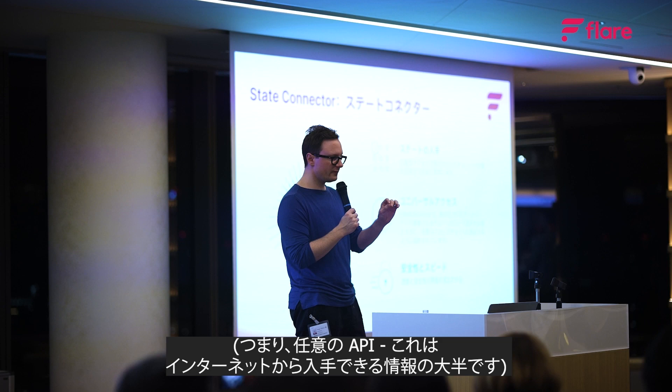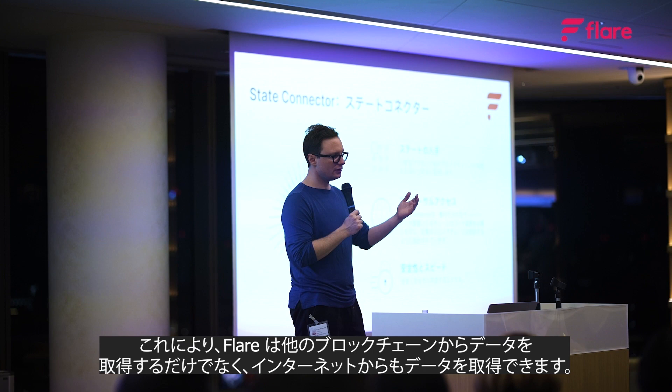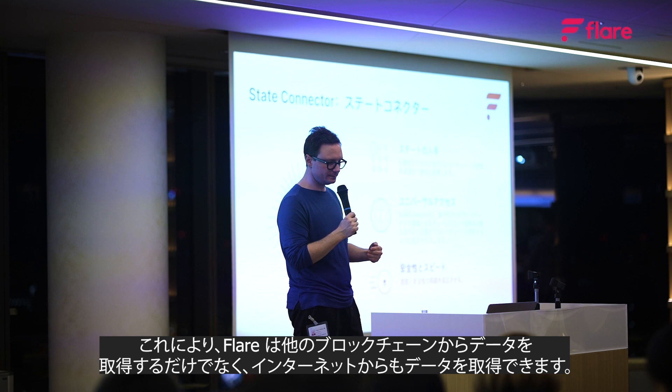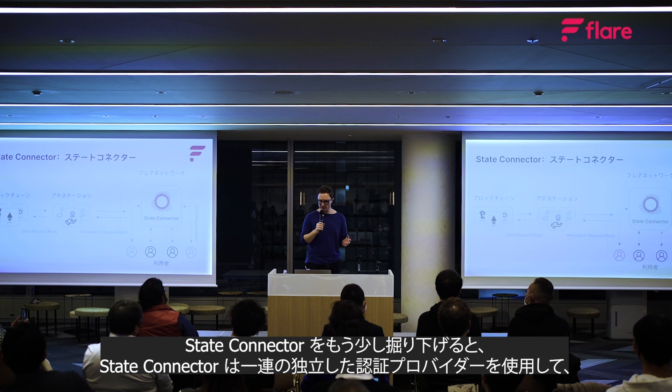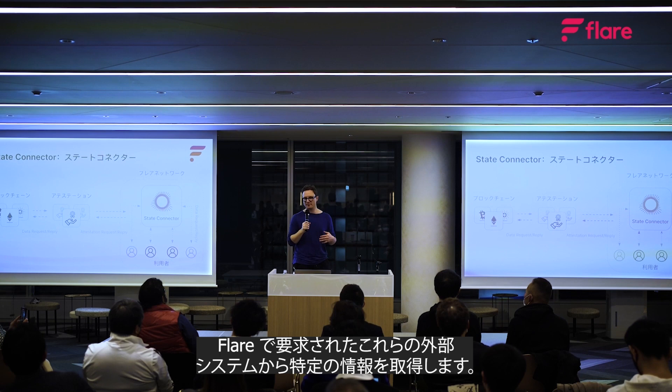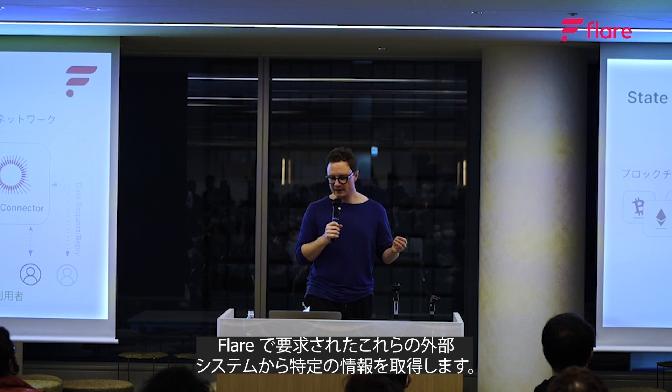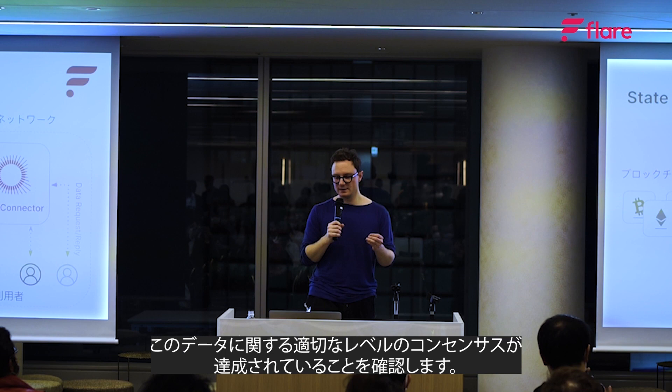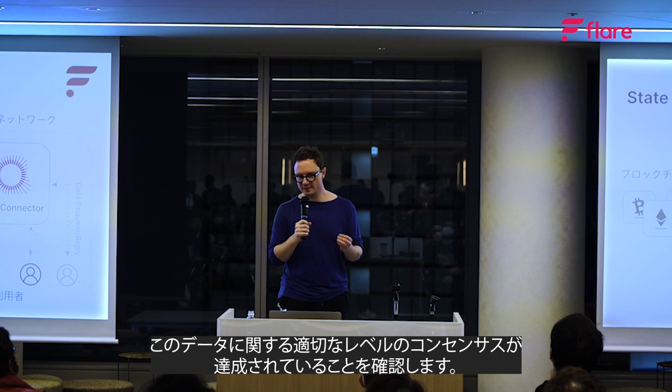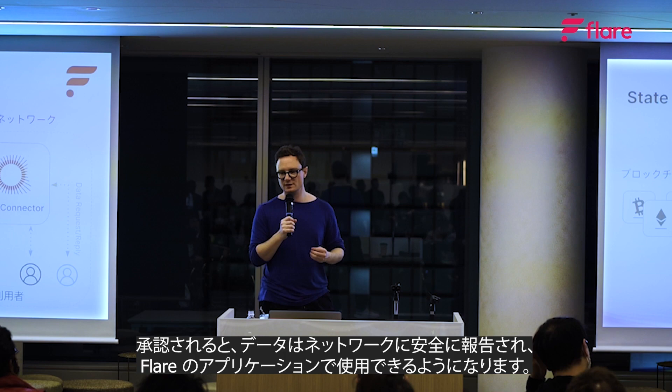This allows Flare not only to get data from other blockchains, but also from the internet. The State Connector uses a set of independent attestation providers to acquire specific information from external systems as requested on Flare. The State Connector smart contract then verifies that a suitable level of consensus over this data has been reached amongst these attestation providers. Once approved, the data is securely reported to the network and available for use in applications on Flare.